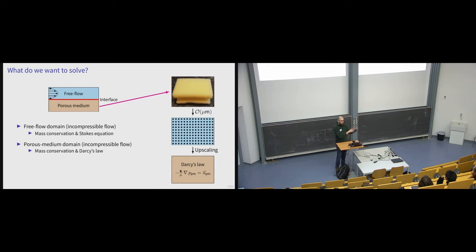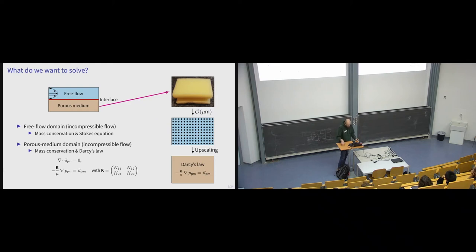Darcy's law gives a simplified equation: pressure-driven flow including viscosity and a permeability tensor that models the effect of obstacles. You can also take the divergence of the Darcy equation and solve a second-order elliptic equation instead. For this talk, I simplify by assuming an isotropic homogeneous material, meaning the off-diagonal entries of the tensor are zero and the diagonal terms are constant — not a real restriction, but it keeps things simple.